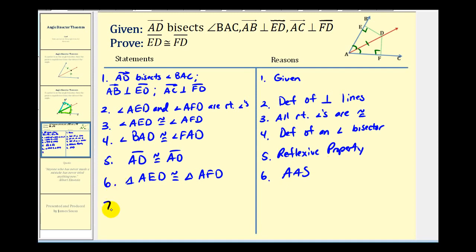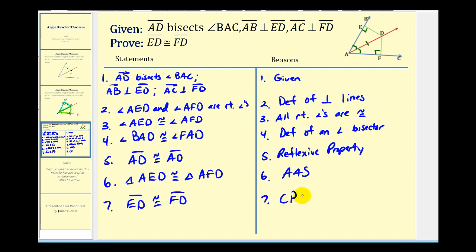If these two triangles are congruent, then their corresponding parts must also be congruent. So segment ED is congruent to segment FD. The reason here is that corresponding parts of congruent triangles are also congruent.